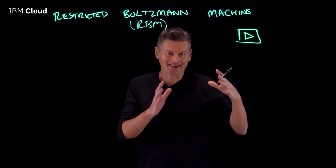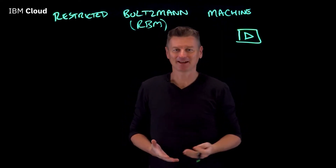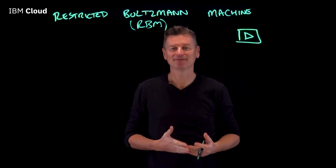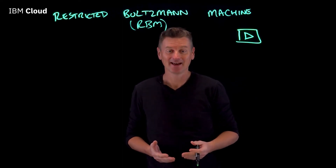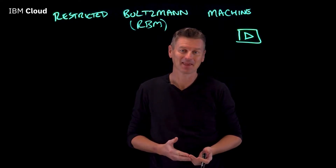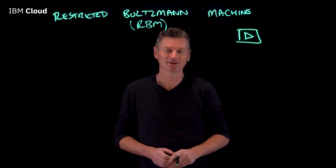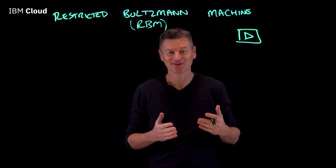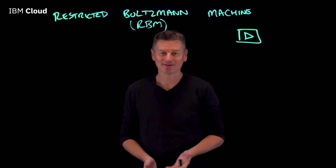RBMs became increasingly popular after a Netflix competition, when it was used as a collaborative filtering strategy to forecast user ratings for movies and it outperformed most of its rivals. A Restricted Boltzmann Machine is a probabilistic graphical model for unsupervised learning that is used to discover hidden structures in data, and a video recommendation system is just a perfect application of that.